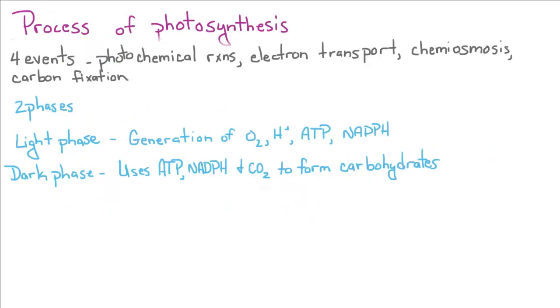So the actual process of photosynthesis has four different events that happen in two phases. You've got your photochemical reactions and electron transport, chemiosmosis, and carbon fixation.